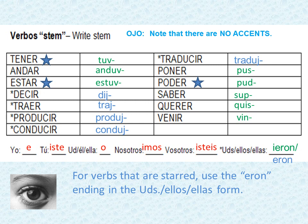This is the sheet you should have already filled in. All the blue ones are the ones we focused on last chapter: tuve, estuve, and pude — which are tener, estar, and poder. This chapter we have decir, which is dij; traer, which is traj; poner, which is pus; and venir, which is vin. Once you know those stems, just like last chapter, you put the endings on the end of the verb.